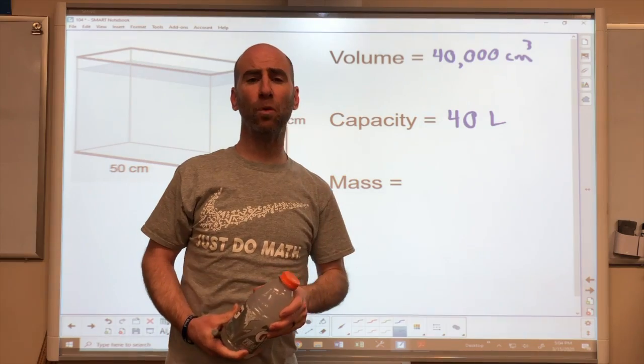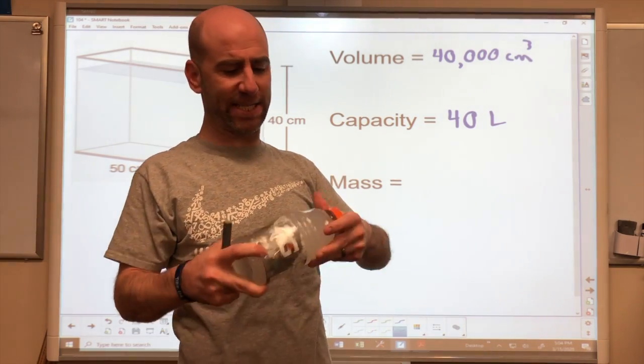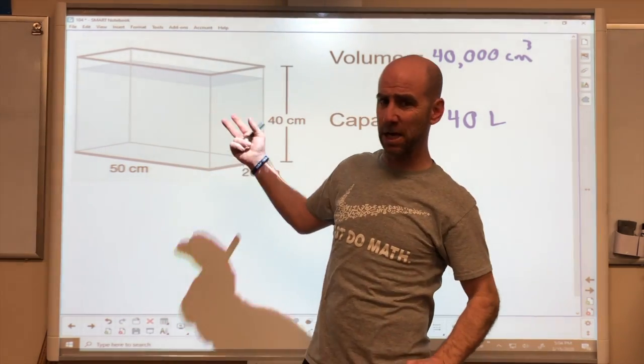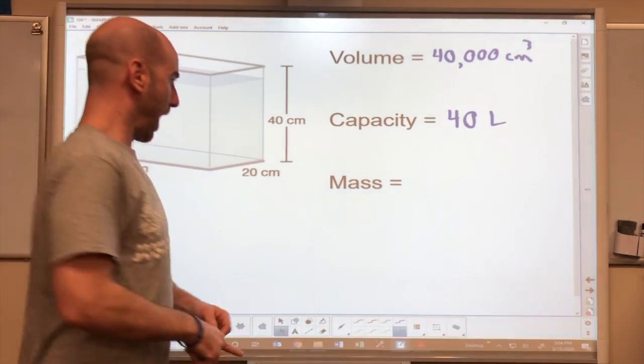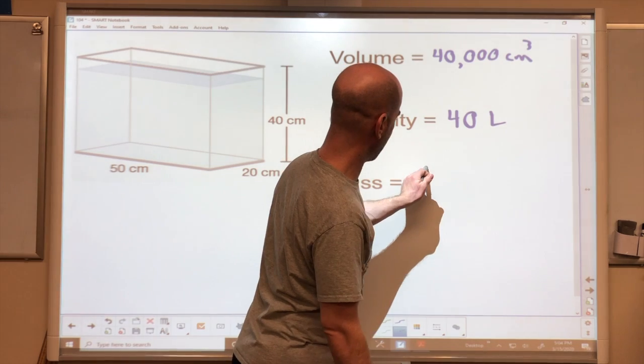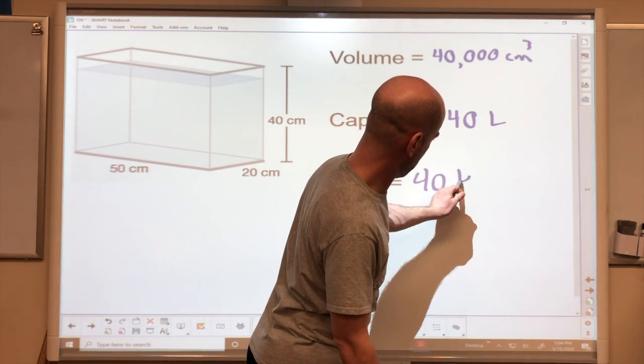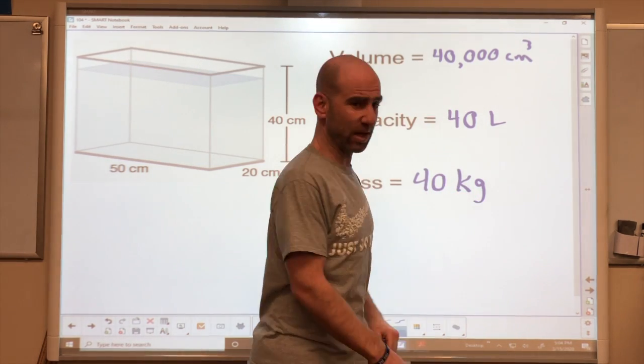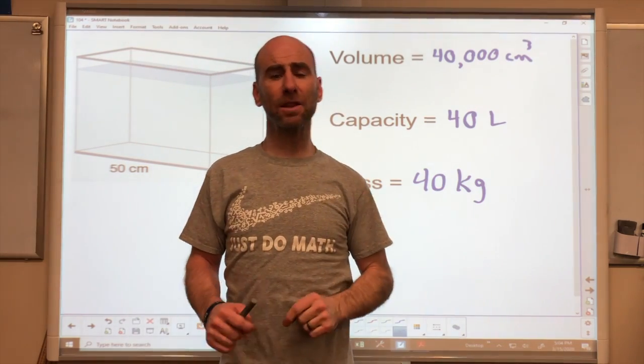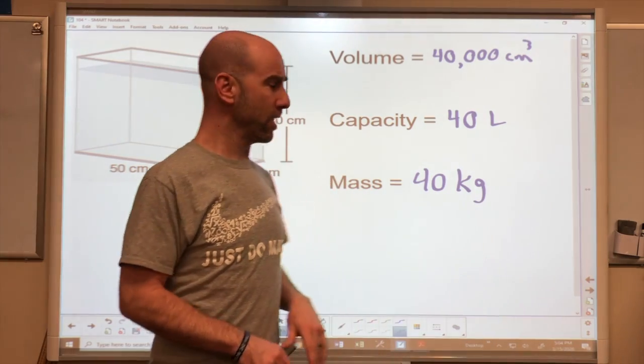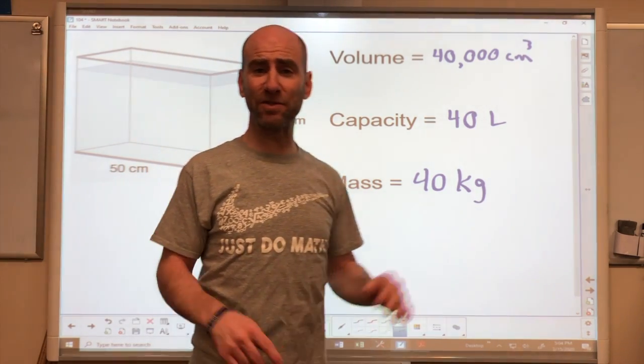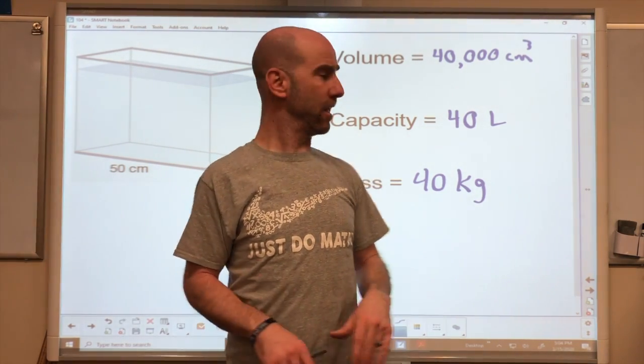So now how much does that water weigh? Not the fish tank itself, not the glass, just the water inside. And we find it to be 40 kilograms. Remember, a kilogram is about 2.2 pounds. So this is over 80 pounds of just water long. It's a lot a lot of weight.